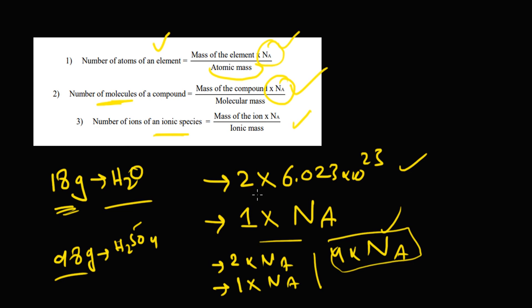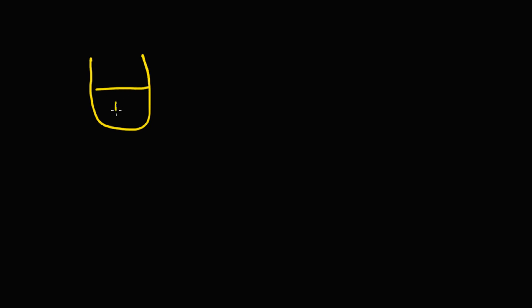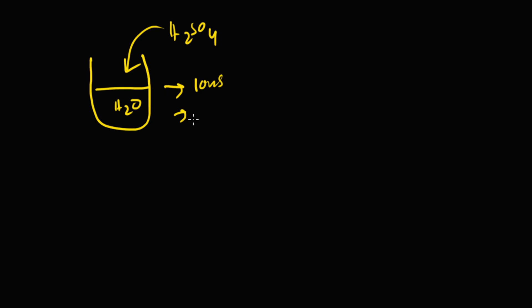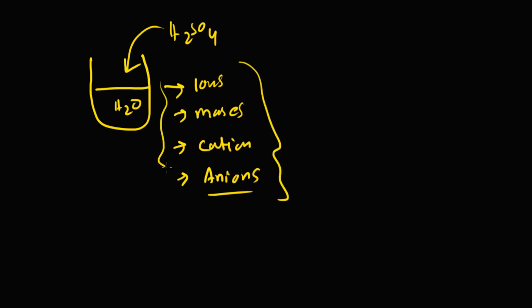Similarly, with the help of Avogadro's number, if we have water and we dissolve a compound in it — let's say sulfuric acid — it will dissociate into ions in solution. We can find the number of ions, and from those ions we can find their masses. We can also find the positive ions formed and the negative ions present in the solution — all with the help of Avogadro's number.